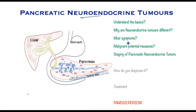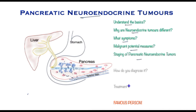What can you expect from the videos? I will break the topic down so it is easy to understand the basics: why the neuroendocrine tumours, also called NET, are different; what symptoms might patients get; how do we measure malignant potential; and what is the staging of the pancreatic neuroendocrine tumours.